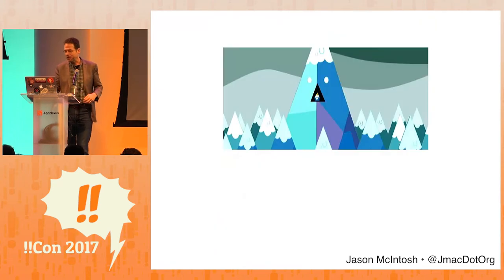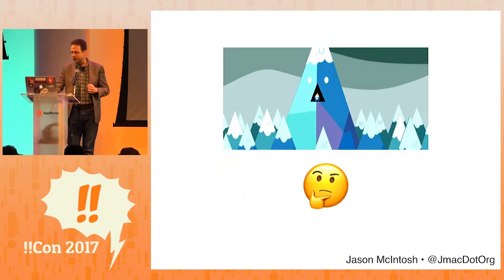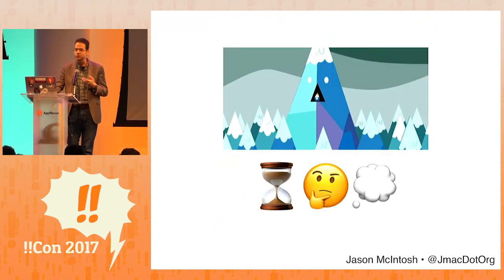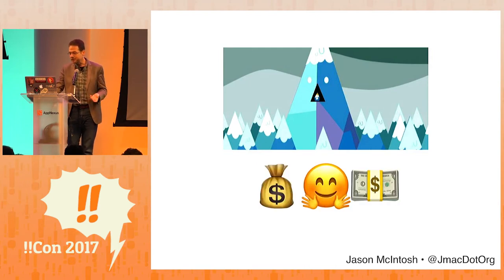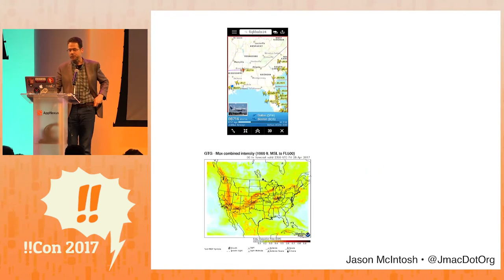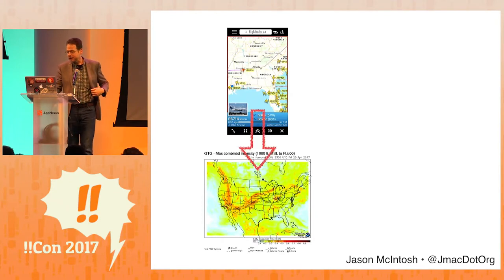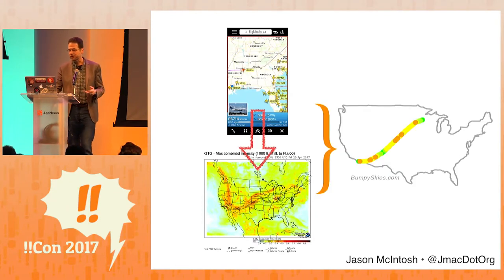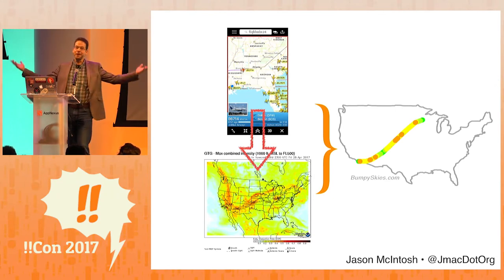And so, as with any project, I began by retreating into my workshop, assuming that I could apply all of my usual methods of isolated study and experimentation until the day I shipped, just as I would with any client-driven task. Obviously, I would need access to two data sources — one for weather conditions and one for flight routes — my idea being that for a given flight, I would run the latter through the former and show you the numbers somehow. My natural introverted starting point was: let's find the public APIs.